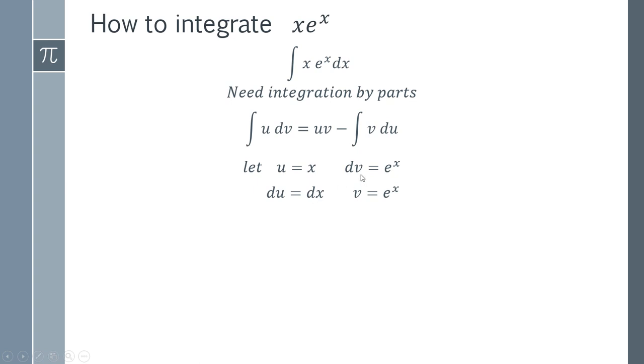And then we're doing the integral of both sides. So the integral of dv is going to give you v. And the integral of e to the x is, of course, e to the x.